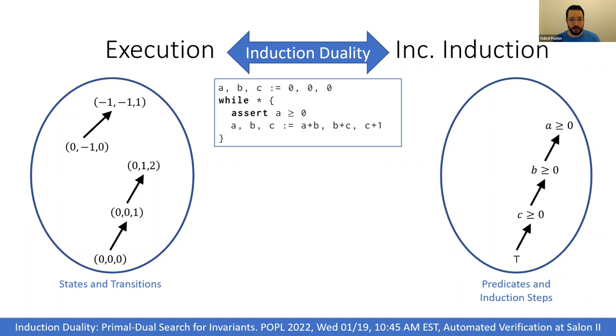For example, in this program we have an induction step from B = 0 to A = 0. If you were to believe that B = 0 is an invariant of this program, then by induction it also follows that A = 0 is an invariant of this program. But these predicates are not invariants of the program and they are not reachable from true via induction steps.